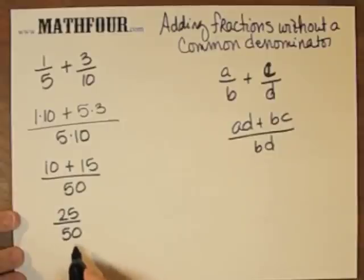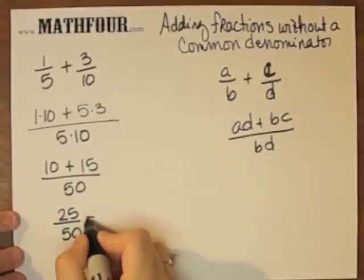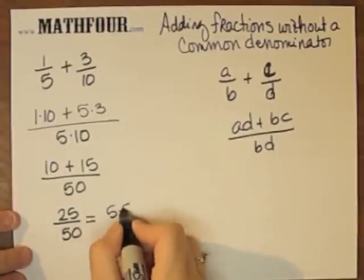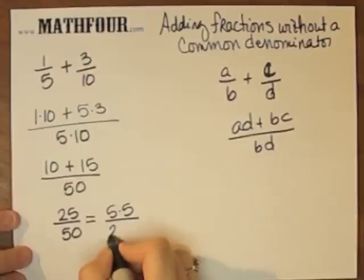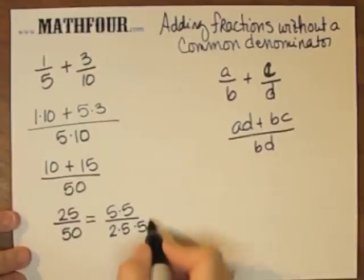Most of us can see that that's 1/2, but I'm going to go ahead and break it down a little bit. This is 5 times 5, and 50 is 2 times 5 times 5, right? 10 times 5.